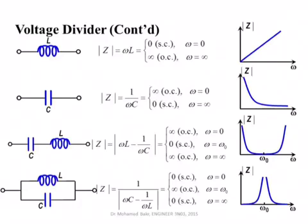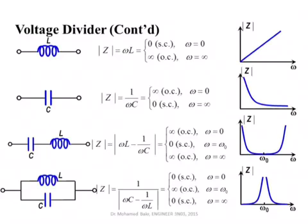The series LC circuit can be used to create band-pass or band-stop filters depending on the selection of L and C. The parallel LC circuit — also called a tank circuit — has a specific frequency at which the two branches cancel each other, resulting in an open circuit. The admittance is 1/jωL plus jωC; summing and inverting gives the impedance. At the resonance frequency the denominator becomes zero, yielding infinite impedance.